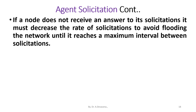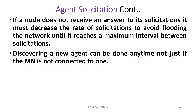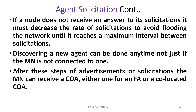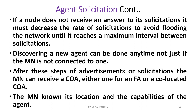If a node does not receive an answer to its solicitation, it must decrease the rate of solicitations to avoid flooding the network until it reaches a maximum interval between solicitations. Discovering a new agent can be done any time. After these steps of advertisements or solicitations, the mobile node can receive a care-of address either from a foreign agent or a co-located COA, and the mobile node knows its location and the capabilities of the agent.